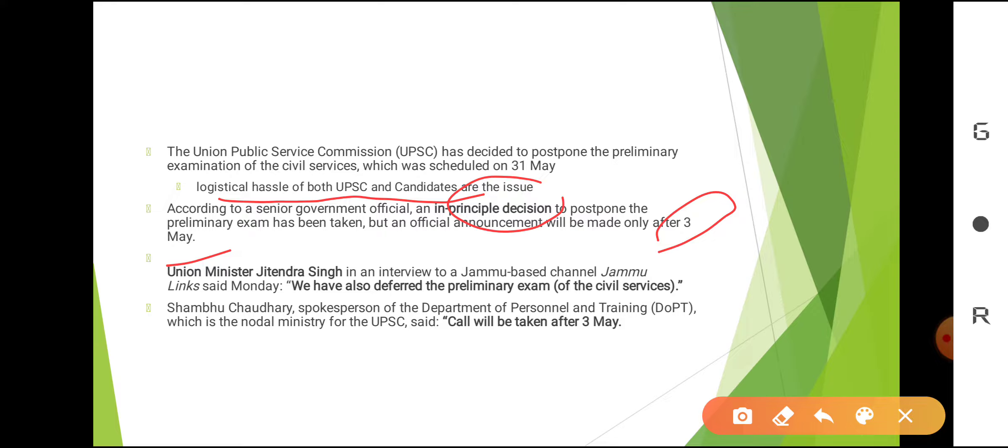Along with that, in an interview, Union Minister Jitendra Singh has also told that they are planning to defer the preliminary examination of civil services. When reporters called Shambu Chaudhary, spokesperson of the Department of Personnel and Training, he told that the call will be taken only after 3rd May, the date at which the lockdown will be shifted.